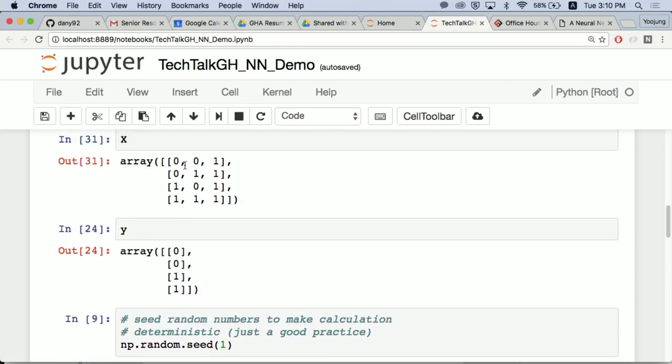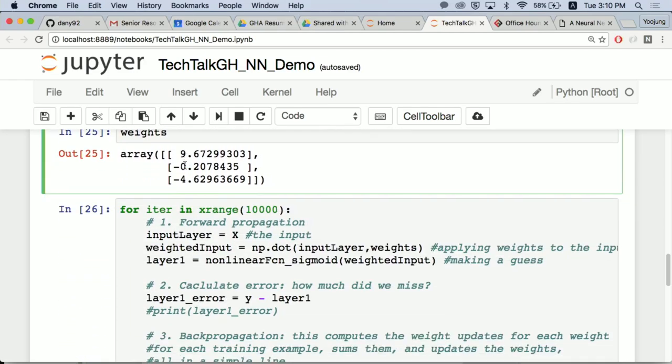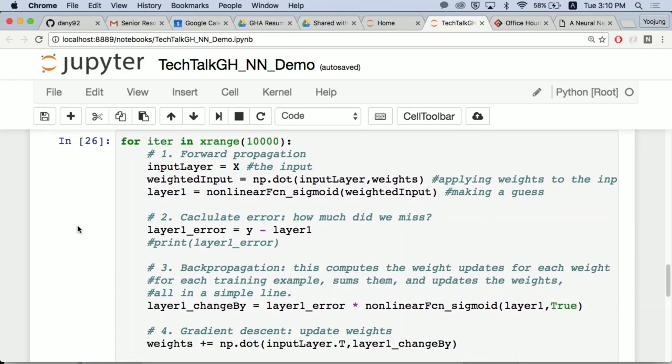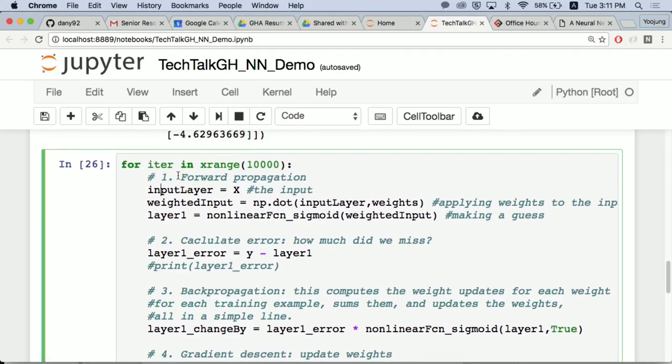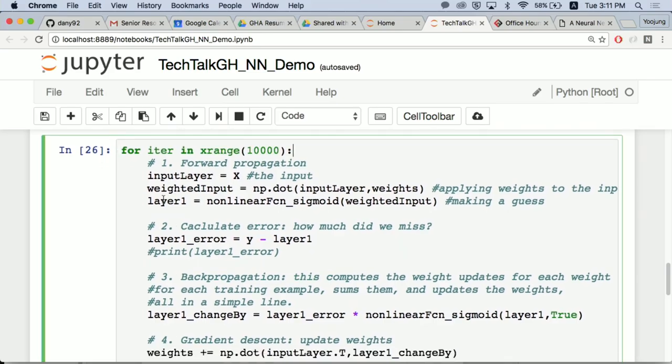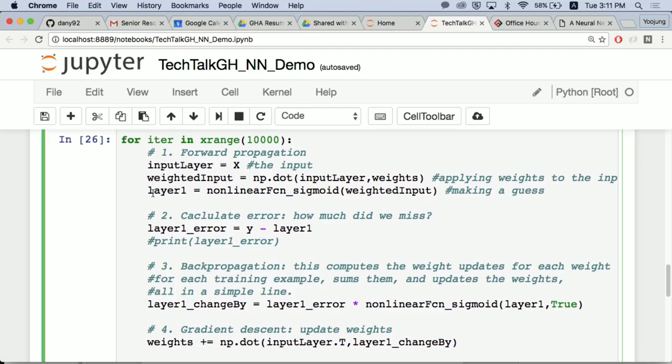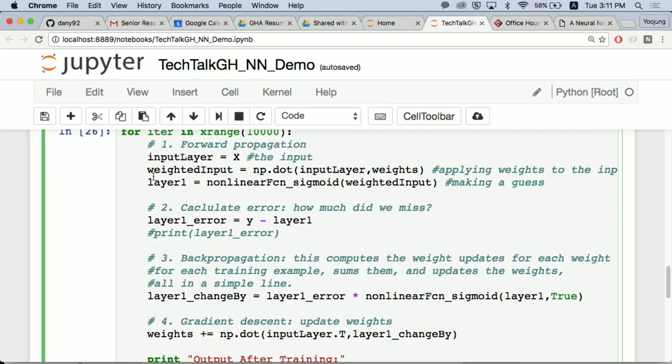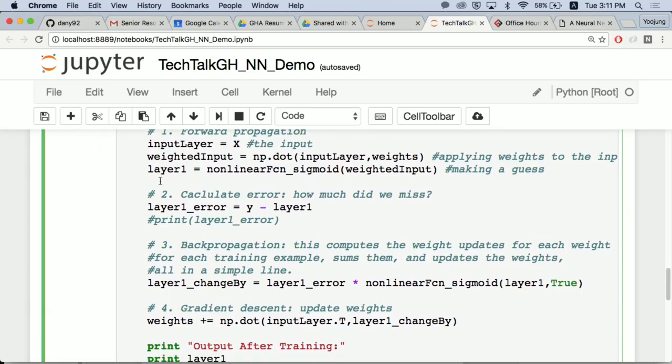Then we have the weights. We're going to initialize them randomly with an average of zero. We're creating three weights because if you go back here, we have three columns or three features. So each feature needs its own weight. Now this is the training, the actual training part. We're going to go forward. This for loop is going to iterate 10,000 times. In each iteration, it's going to set the input layer as X. So basically this is our input of the four Tinder users.